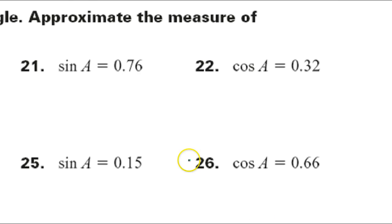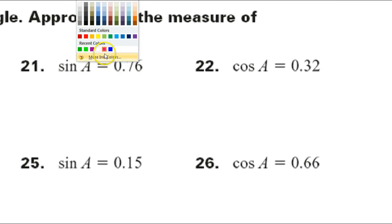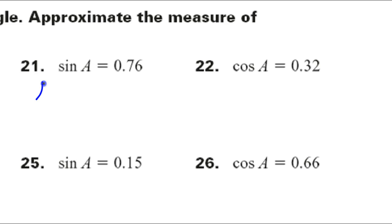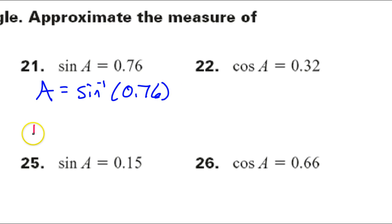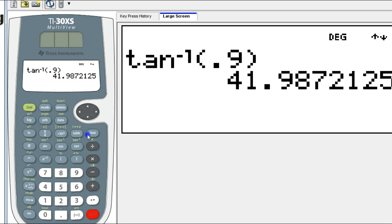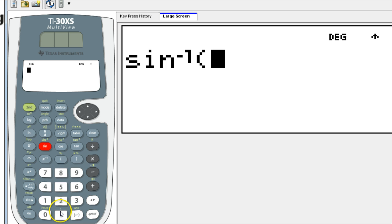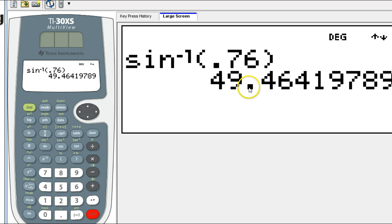Okay, number 21. If you're given the sine and you want the angle, then you will use the inverse sine. So I will do the inverse sine of 0.76. That is 49.5 degrees.